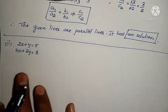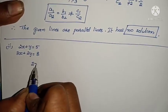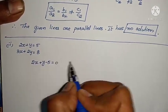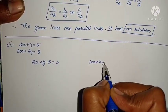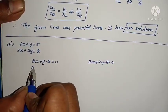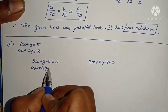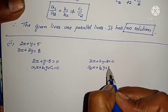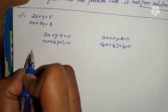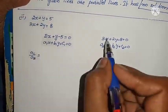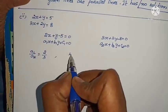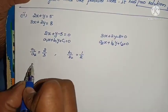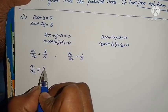Let us go to the next problem — the second question. See, take the first equation: 2x plus y, sending plus 5 to the other side gives minus 5, so 2x plus y minus 5 equals to 0. Second equation: 3x plus 2y minus 8 equals to 0. These are in the model of A1x plus B1y plus C1 equals to 0, and A2x plus B2y plus C2 equals to 0. Now find A1/A2 equals 2/3. B1/B2 equals 1/2. A1/A2 is not equal to B1/B2.